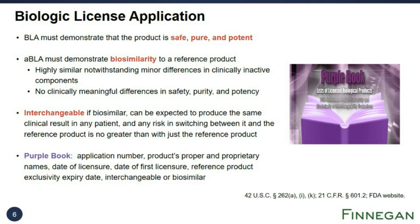An interchangeable product is one that is biosimilar and can be expected to produce the same clinical result in any given patient. In addition, the risk of switching between the interchangeable product and the reference product must be no greater than when just using the reference product alone. Approved biologics, biosimilars, and interchangeables are listed in the FDA's Purple Book, along with information such as the date of licensure and the expiration date for the reference product's exclusivity. Unlike the FDA's Orange Book for small molecule drugs, the Purple Book does not list patent information. Note that the Purple Book includes two lists—one from CDER and one from CBER—so make sure you are checking both lists.